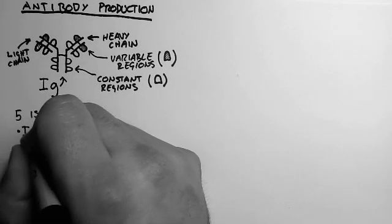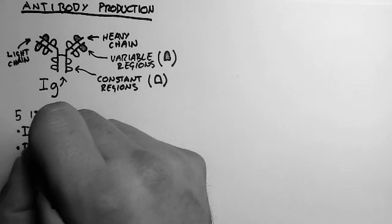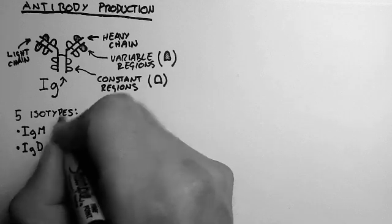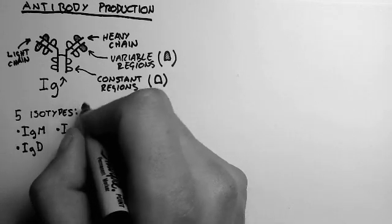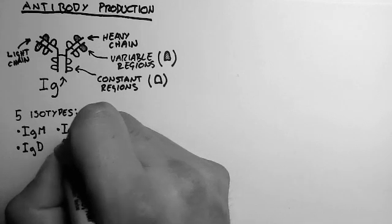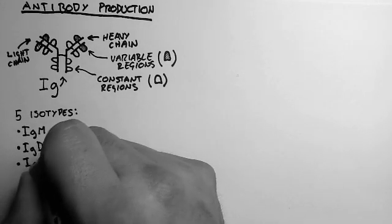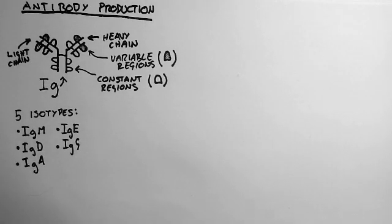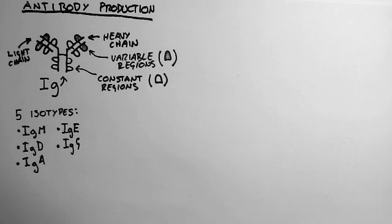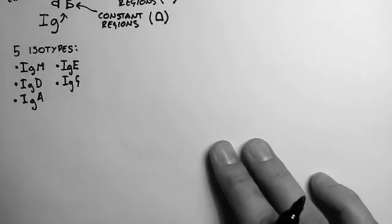And they're known as IgM, IgD, IgE, IgG, and IgA. This means immunoglobulin M, immunoglobulin E, etc. Now just keep those in mind, and we'll explain what they mean later on.